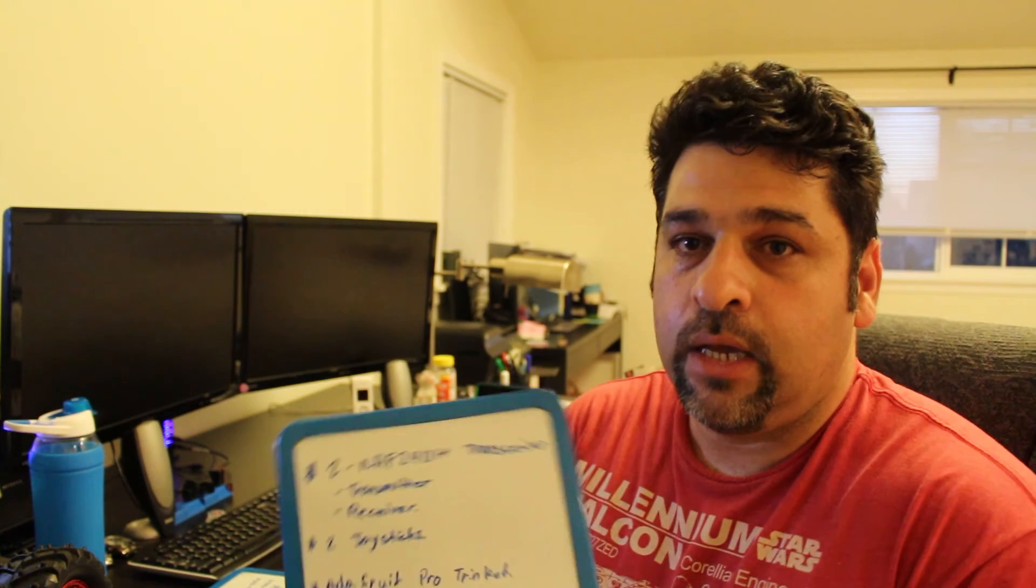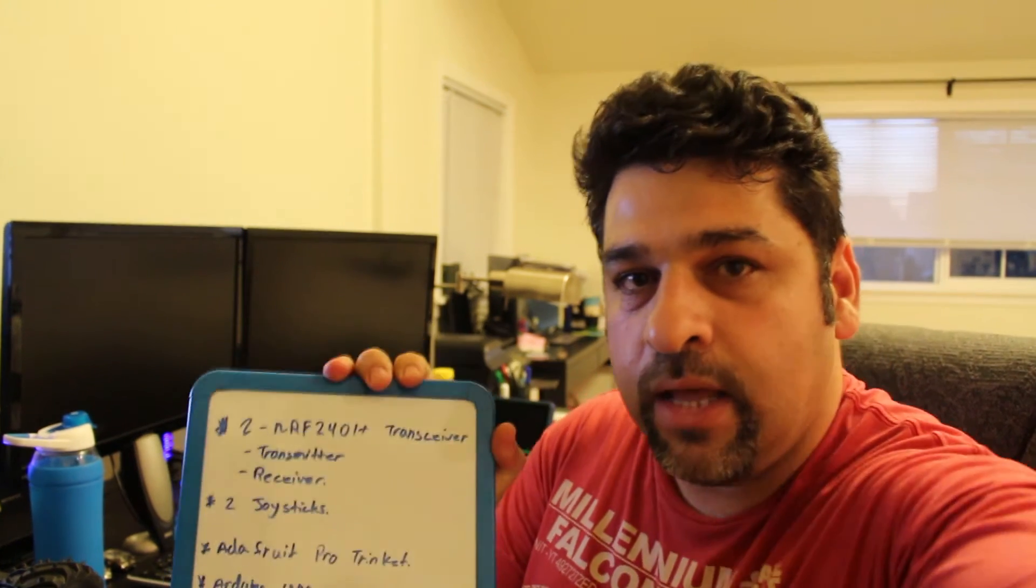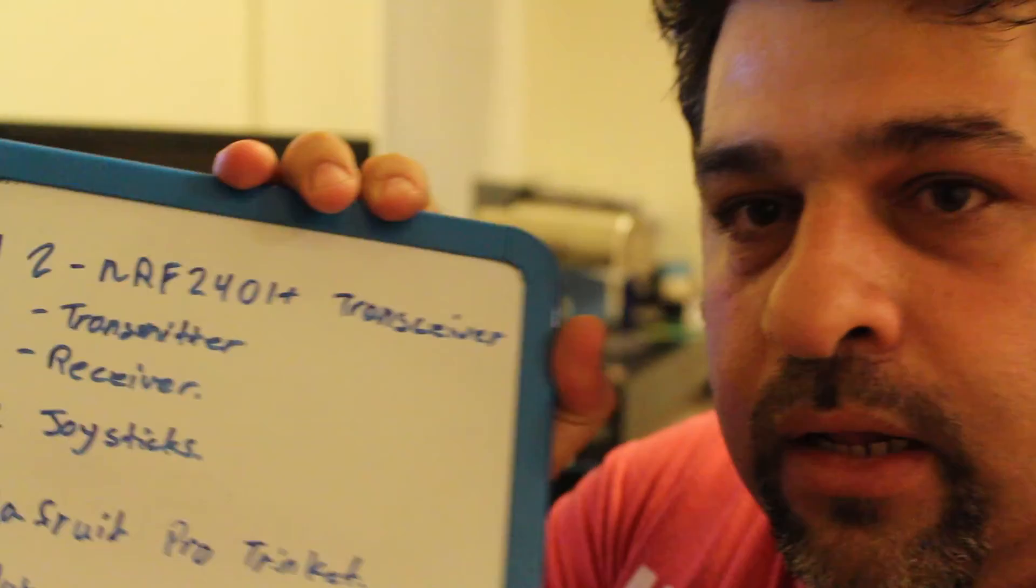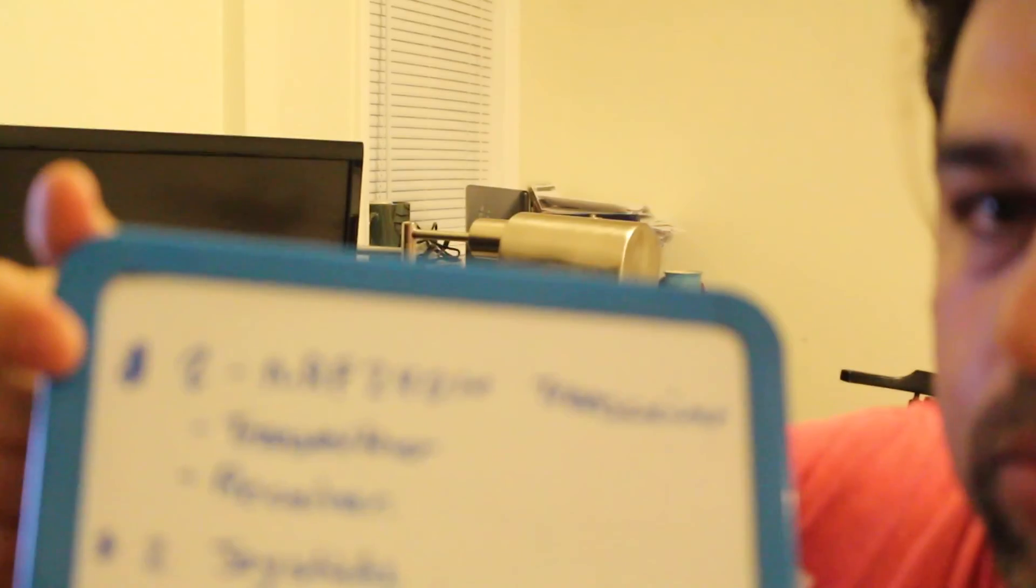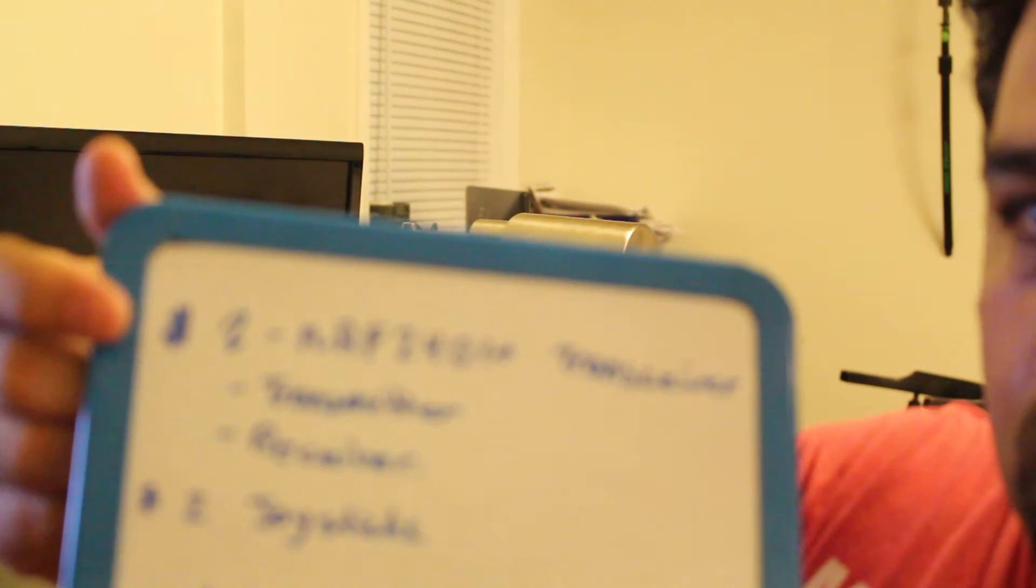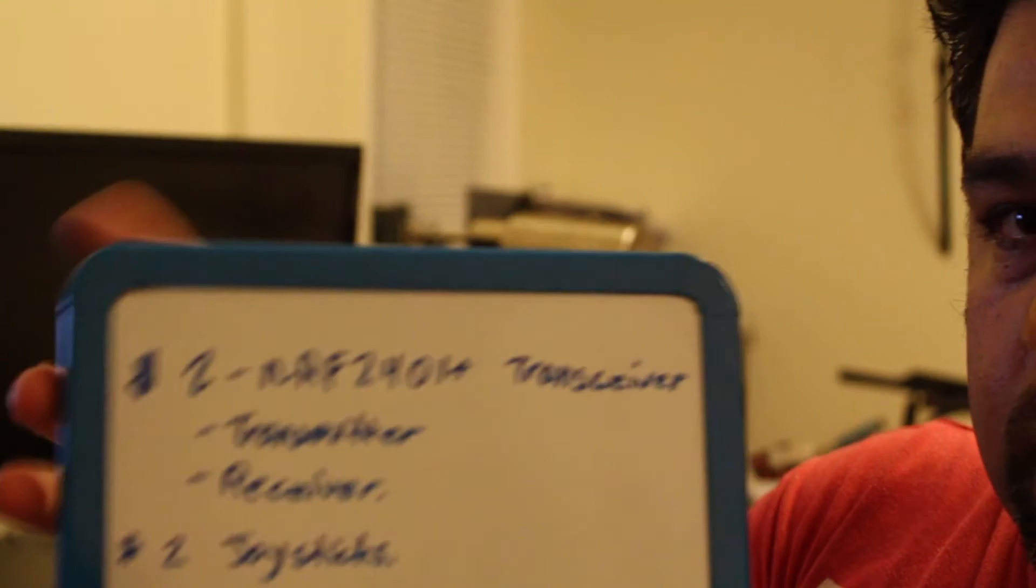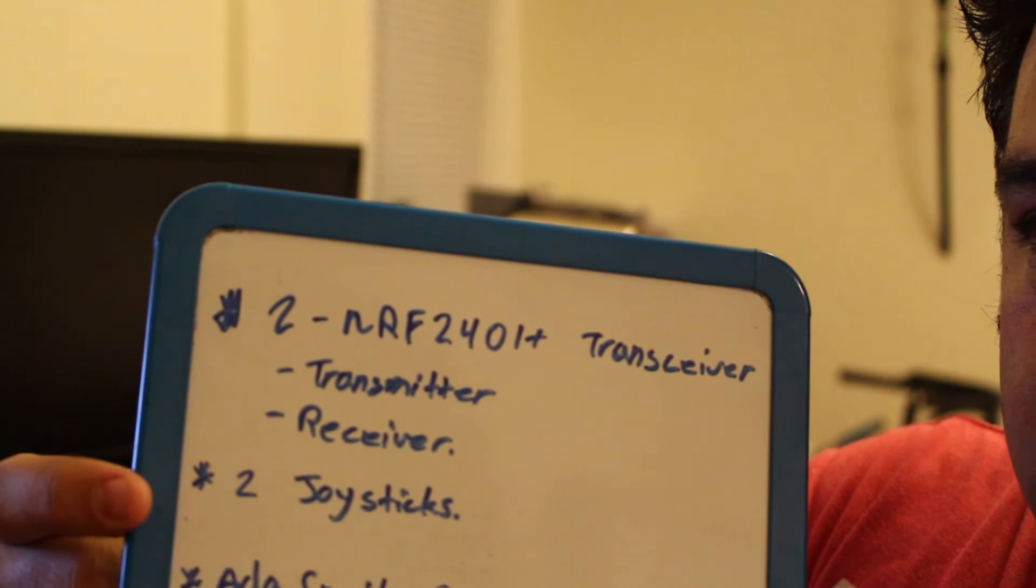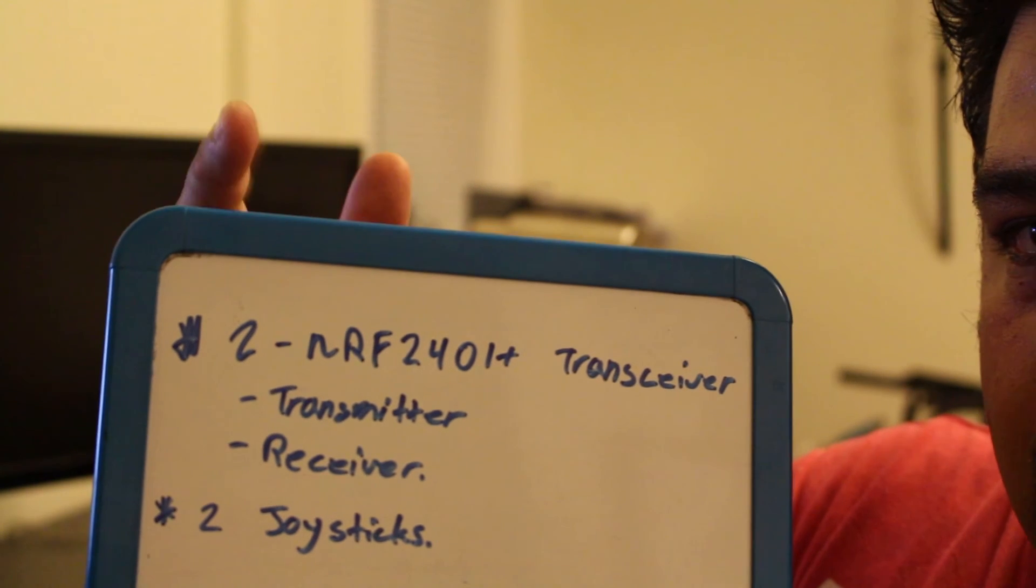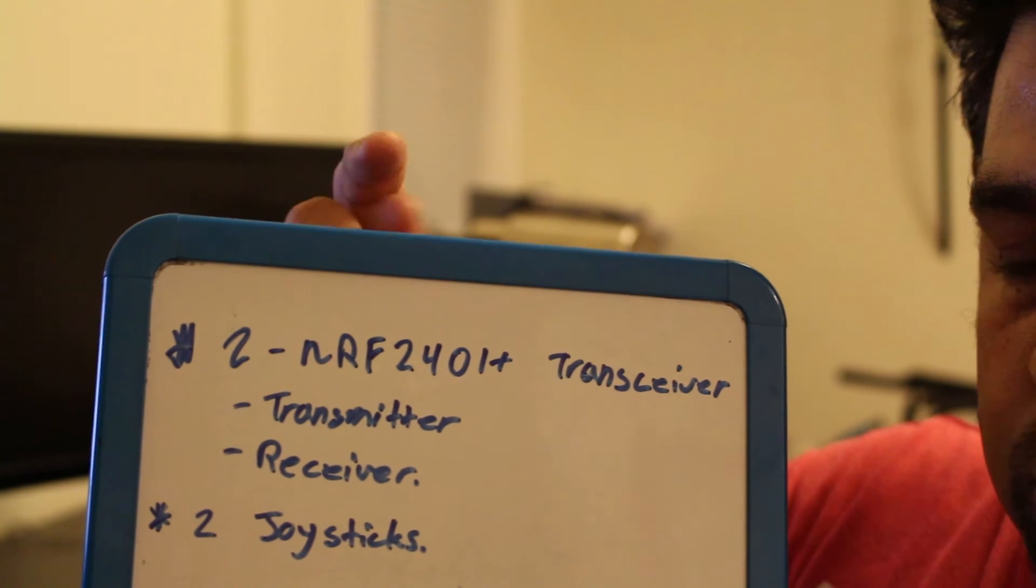So here's what we're going to do this episode. We're actually going to use two transceivers. One to transmit and the other one is to receive it. We will use two joysticks. So we'll have the up, down, left, right and then the push button as well.